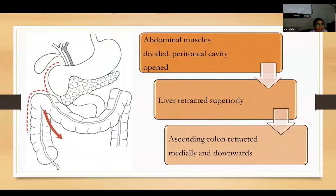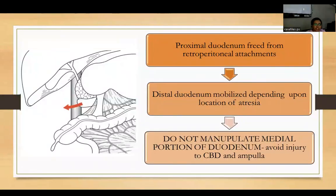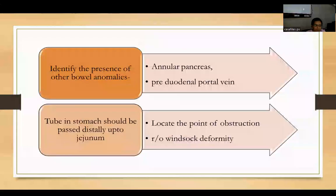Abdominal muscles are divided, the peritoneal cavity is opened, liver is retracted superiorly, and ascending colon is retracted medially and downwards. The proximal duodenum is freed from retroperitoneal attachments, and the distal duodenum is mobilized depending on the location of the atresia. We do not manipulate the medial portion of the duodenum to avoid injury to the CBD and ampulla. Other anomalies including annular pancreas and pre-duodenal portal vein are identified. A tube passed through the stomach into the duodenum locates the obstruction and rules out windsock deformity.